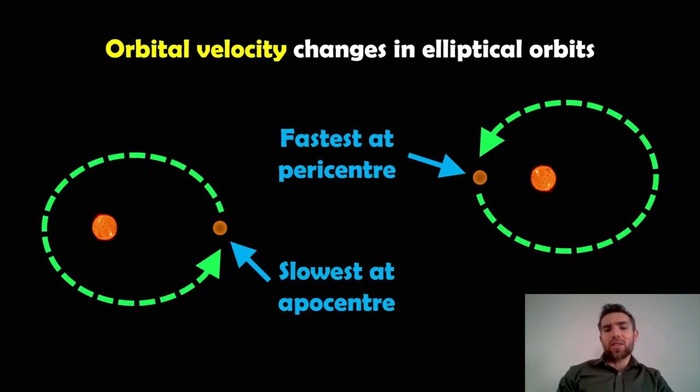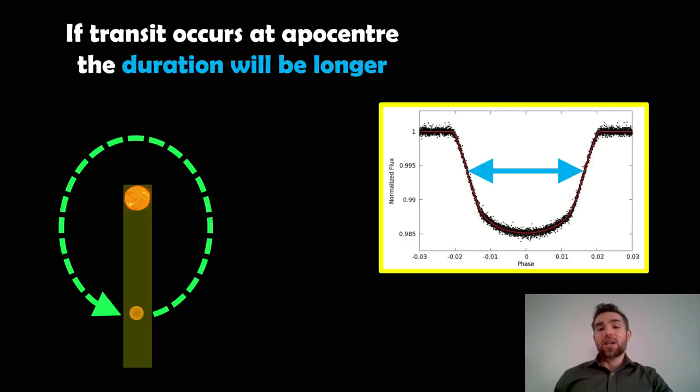The fastest orbital period will be at the pericentre, which is the closest point. And then the slowest will be on the opposite side. So a full half an orbit around, half a phase around or 180 degrees around, that's going to be its slowest when it's furthest away from the star.